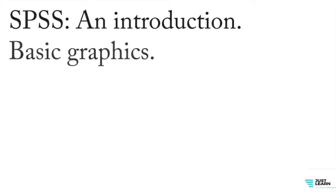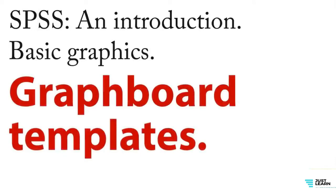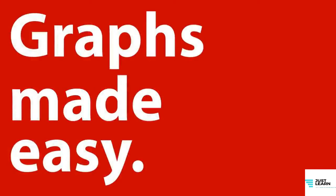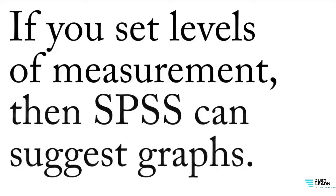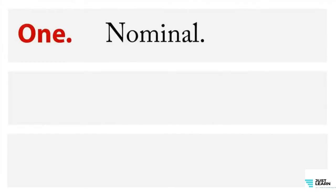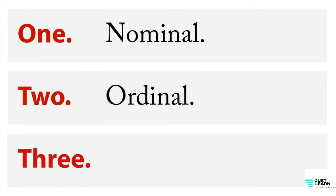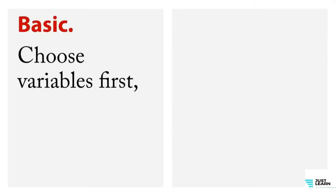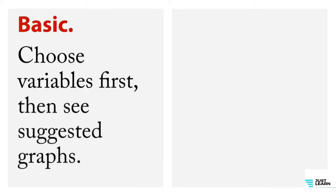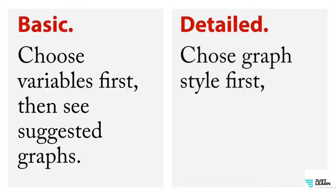Our next step is to look at basic graphics, because those are always a good first step in analysis. The easiest way to do that in SPSS is with something called Graphboard Templates — just think of these as 'graphs made easy.' The idea is that if you set the levels of measurement in SPSS, then SPSS can suggest graphs appropriate for those variables. SPSS uses three levels: nominal for different categories, ordinal for ranks, and scale for interval or ratio level measurements. In the graphboard templates, you have two basic choices: basic graphs, where you choose the variables first and SPSS shows suggested graphs; and detailed, where you choose the graph style first and then choose the variables.